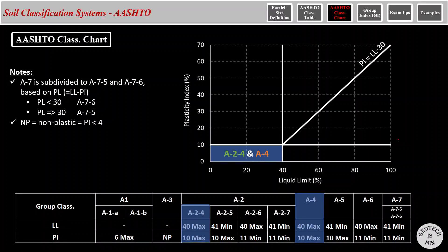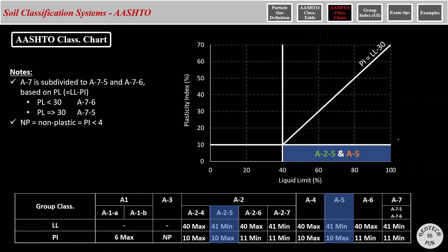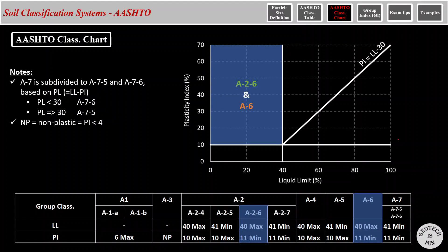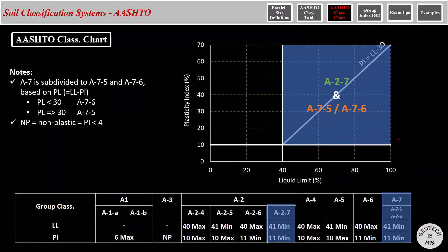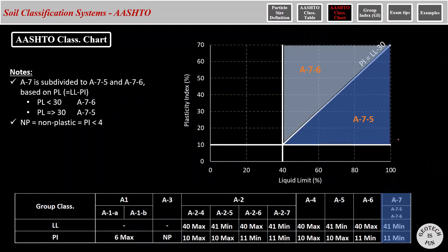A-2-4 and A-4 are on the bottom left. A-2-5 and A-5 are on the bottom right. A-2-6 and A-6 on the top left. A-2-7 and A-7s on the top right. And this is how A-7-6 and A-7-5 are divided based on the plasticity limit line of 30%.